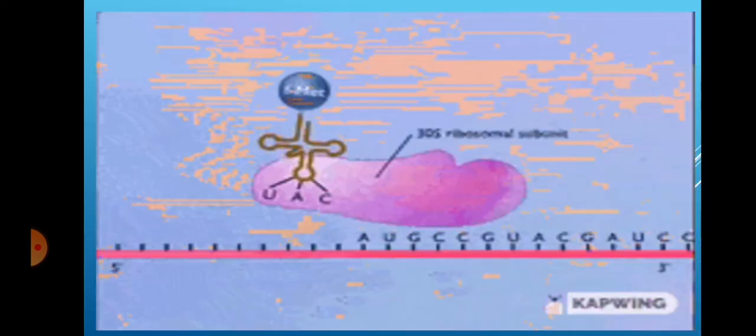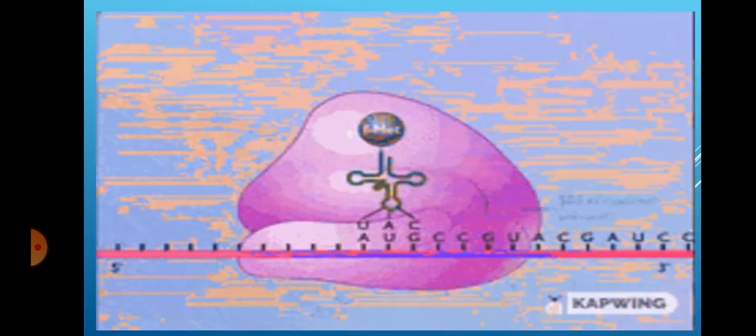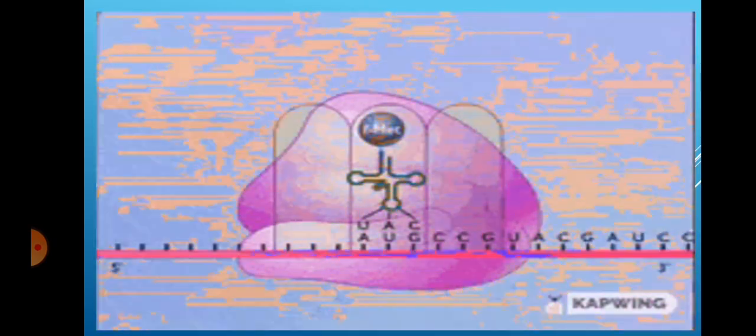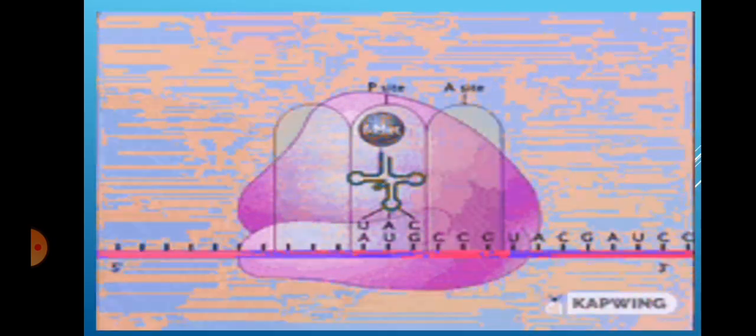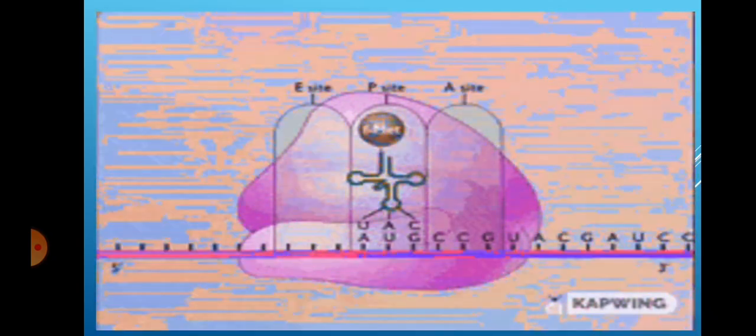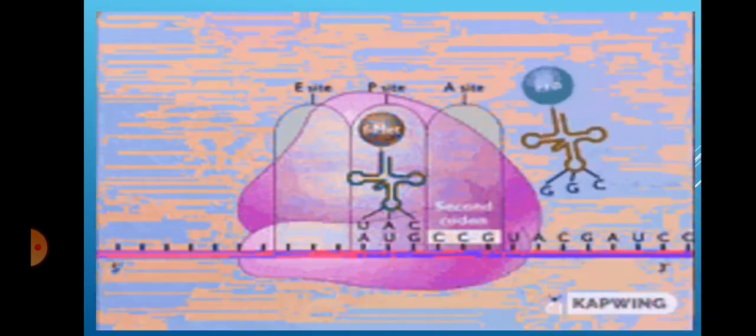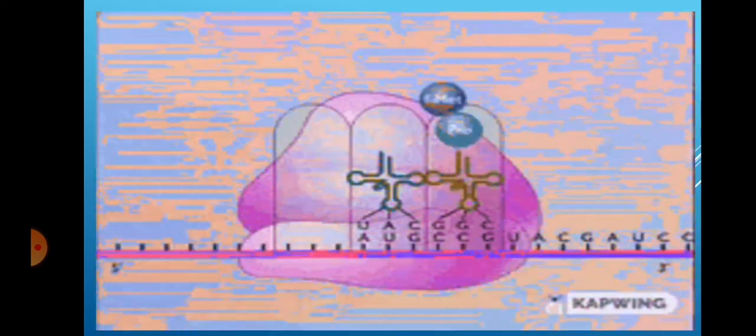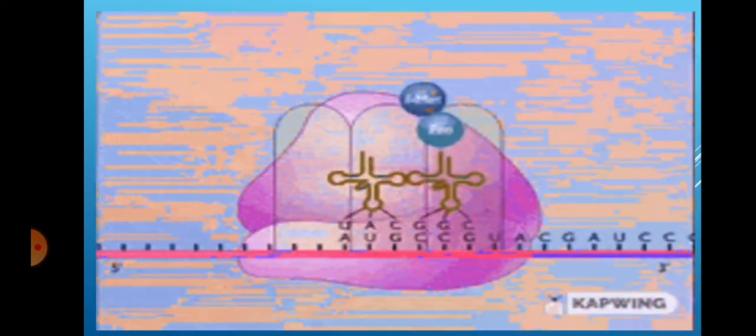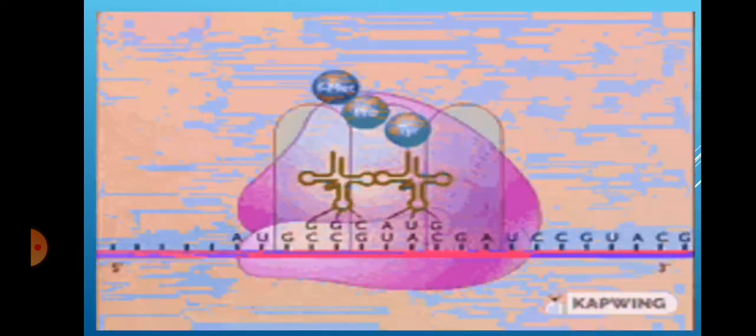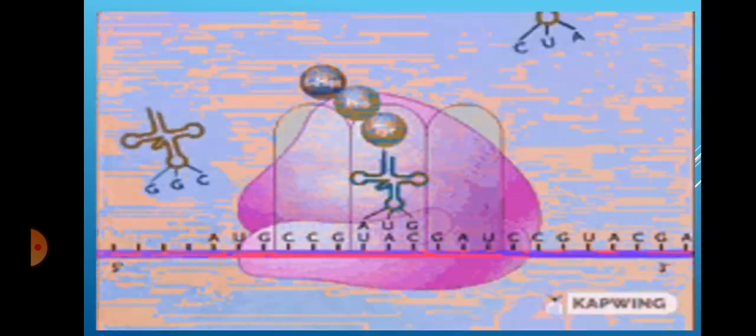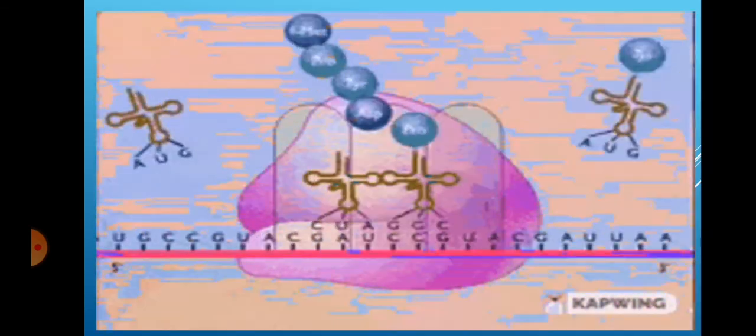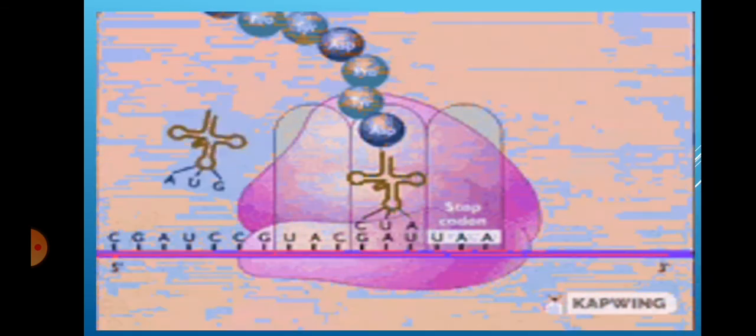In this slide, you can see the total translation process by animation. Ribosomal units are attached. There are three sites: E site, P site and A site. tRNA comes with anticodons and attaches with mRNA codons. And amino acids are attached one after another. And finally, produces polypeptide bonds which are called proteins.